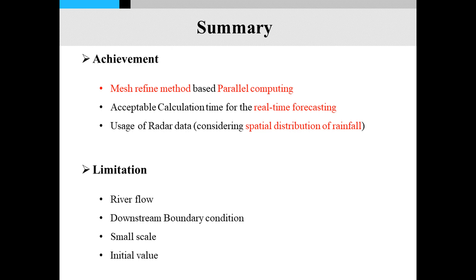I use rainfall data considering spatial distribution, so if we can obtain prediction rainfall data we may be able to forecast urban inundation with enough lead time. However, I still didn't consider the river flow because I didn't include the cross sections of the rivers. Also the boundary condition is a problem because this area is connected with other rivers but there was no water depth observation station. Additionally, I didn't consider the initial condition of the basin — the initial condition was a cold start. Thank you very much.